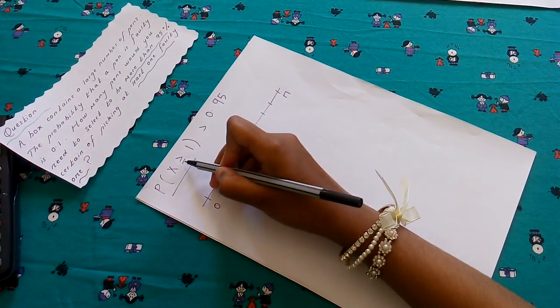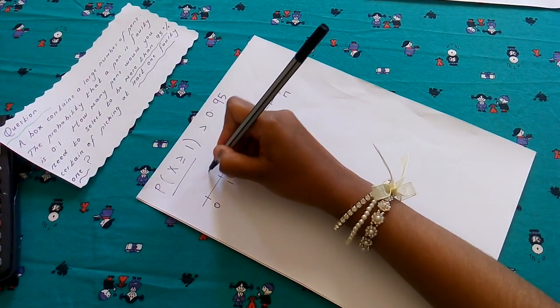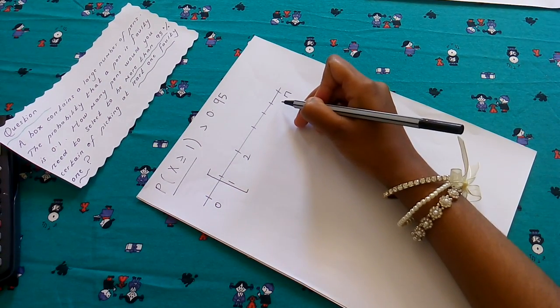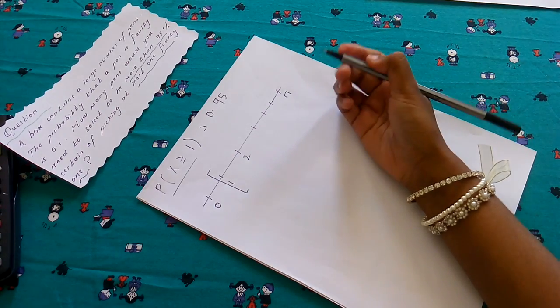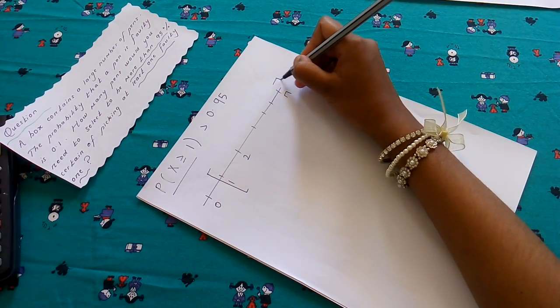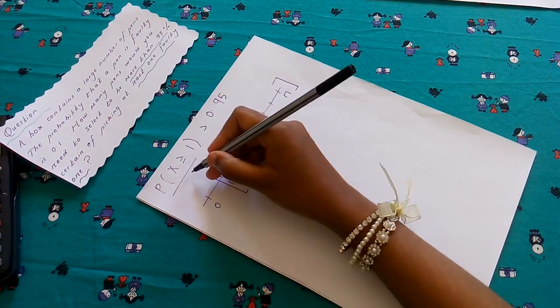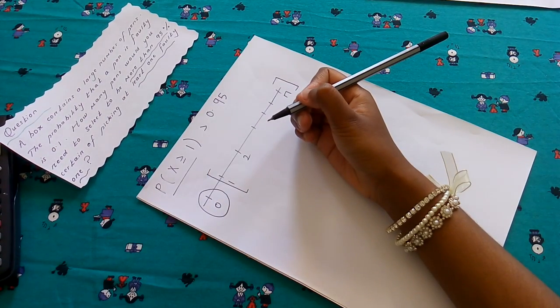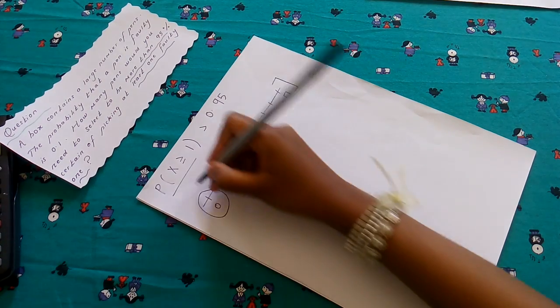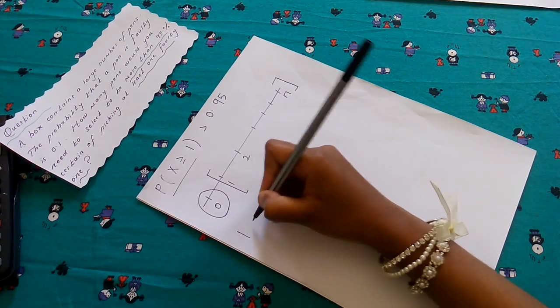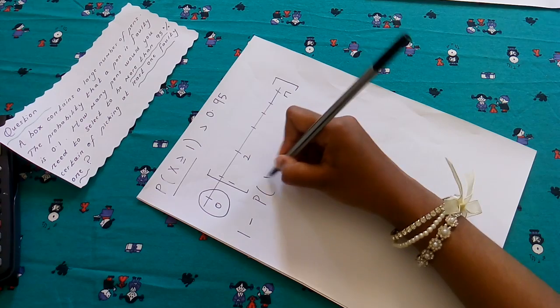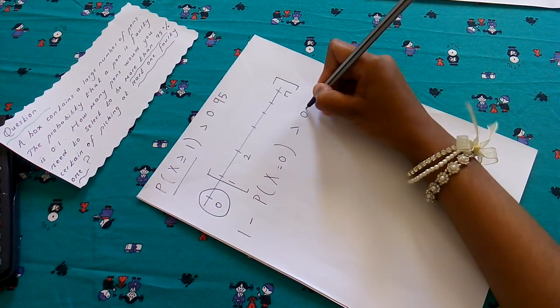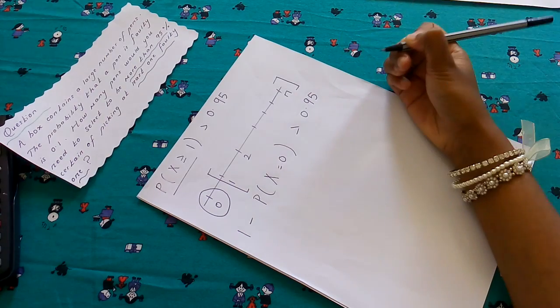Now probability of X greater or equal to 1 means we're going to consider which values: 1, 2, 3, up till n. Now what are the values that we do not want that is not included in this probability? It's 0. Now we know that the sum of all probabilities is 1. So we can say that 1 minus P(X = 0) is greater than 0.95.